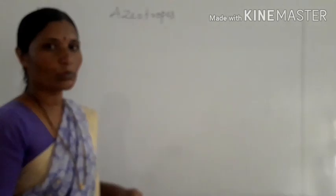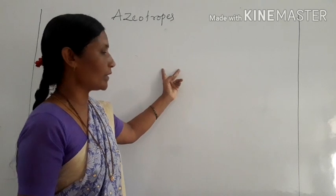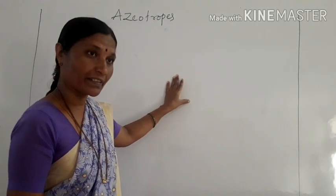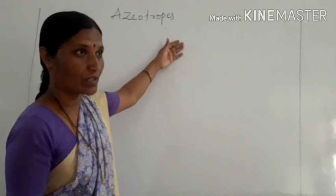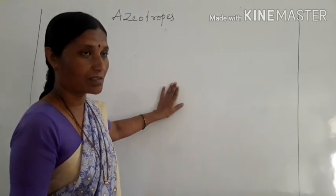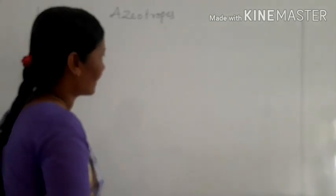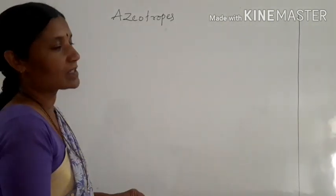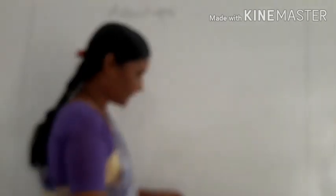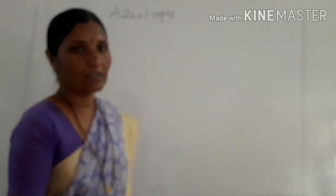Similarly, for negative non-ideal solutions, if the interaction between solute and solvent is stronger, evaporation of molecules from the solution is less, hence it shows a negative deviation from Raoult's law. We have discussed examples and graphs to clarify positive and negative non-ideal solutions.